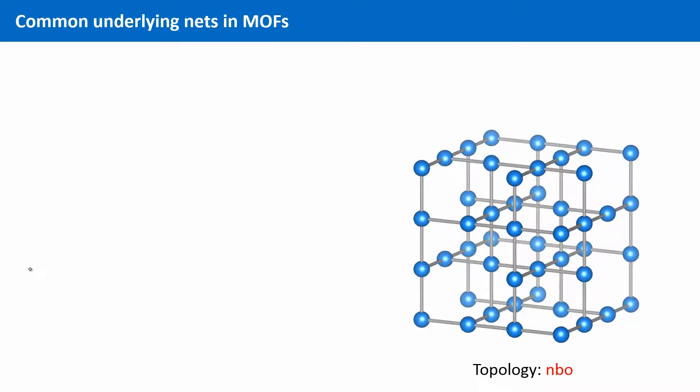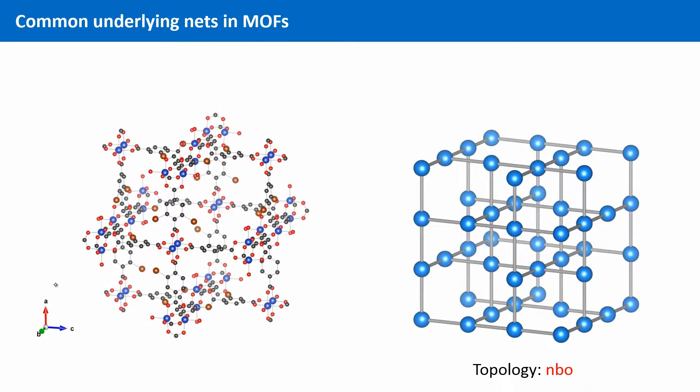Another common net is the NBO net. This net got its name from the similarity to niobium oxide or NBO. This net can be found in MOFs where square planar SBUs are present that are perpendicular to each other, like in this MOF right here.